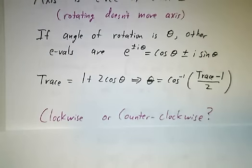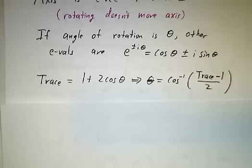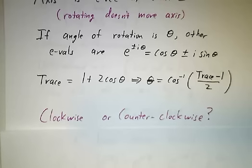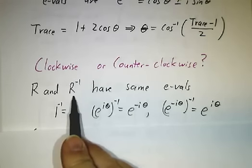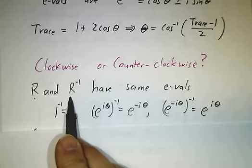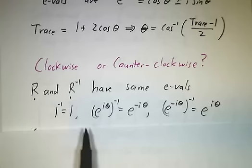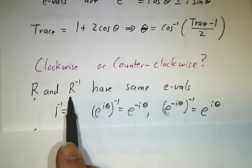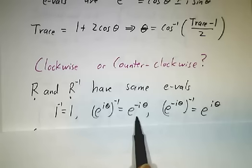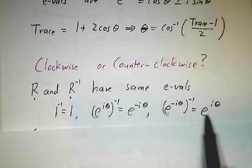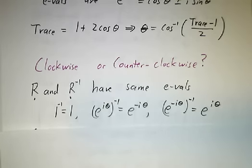Whether it's clockwise or counterclockwise is a matter of perspective. If you look at a car driving down the street, are its wheels turning clockwise or counterclockwise? It depends on where you're looking from. Also, if you have a matrix and its inverse, they're both rotations — one clockwise and the other counterclockwise — yet they have the exact same eigenvalues. The eigenvalues of R-inverse are the reciprocals of those of R: the reciprocal of 1 is 1, the reciprocal of e^(iθ) is e^(−iθ), and vice versa. So you can't tell the direction by looking at the eigenvalues.